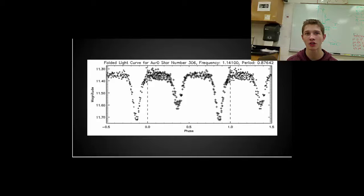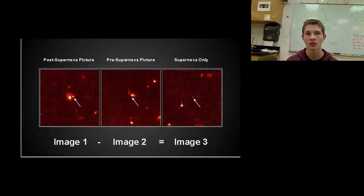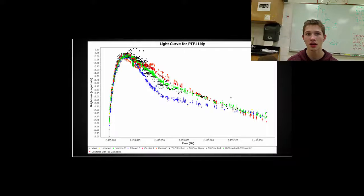A binary system is an automatic candidate for a type 1a supernovae. When astronomers notice the system become a supernovae, astronomers will subtract post- and pre-supernova pictures to create the picture of the supernovae on its own. In addition, its light curves will be plotted. These light curves are essentially a graph of brightness over time. Through these, red shifts can be determined.